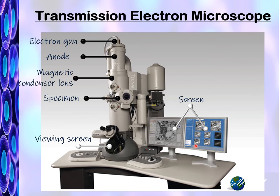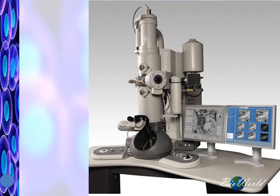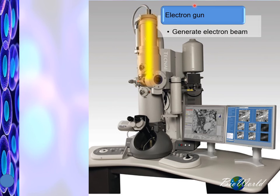Let me now discuss the brief mechanism by which transmission electron microscopes work. Once the electron microscope is switched on, the electron gun will generate an electron beam. In this beam, the electrons will be traveling at high speed.